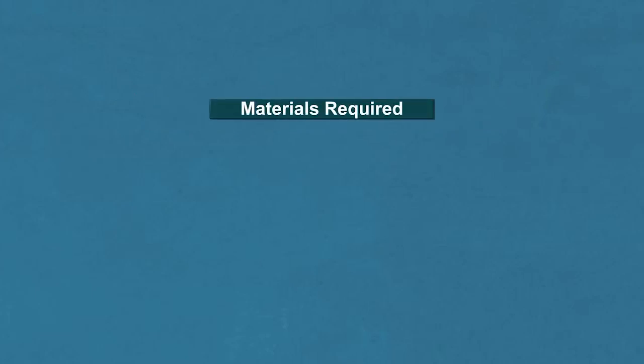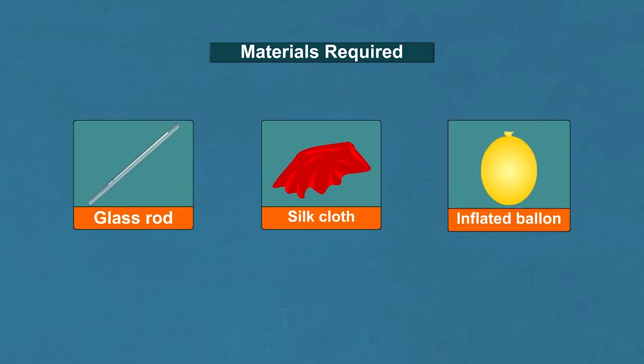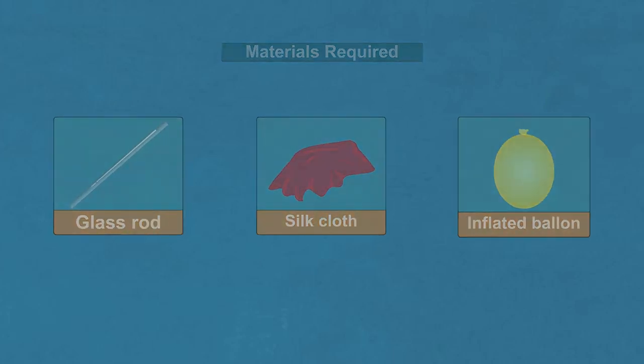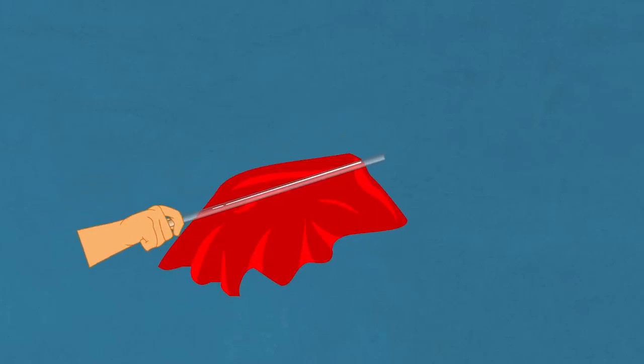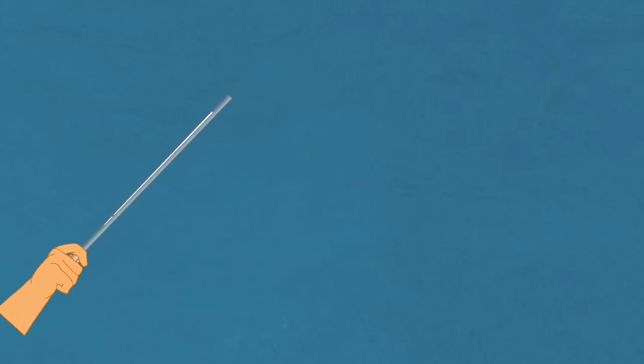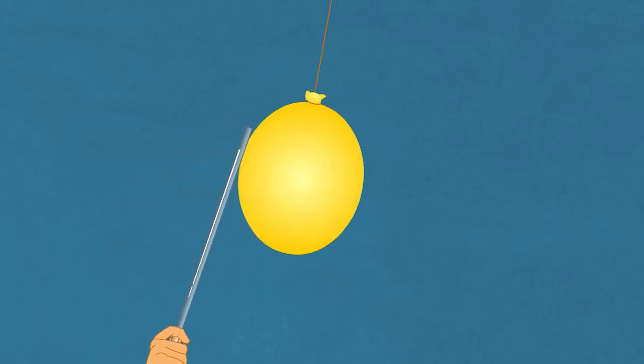Materials required: a glass rod, a silk cloth and an inflated balloon. Procedure: Rub the glass rod with a silk cloth for about 30 seconds. Bring the glass rod near the inflated balloon and observe what happens. Repeat the procedure with a different glass rod and silk cloth if available.